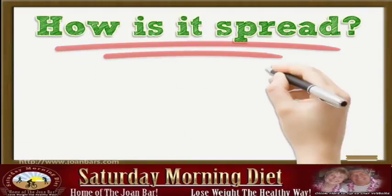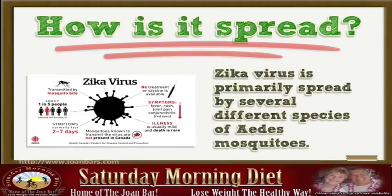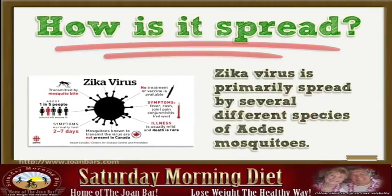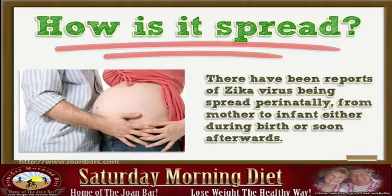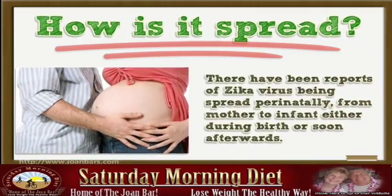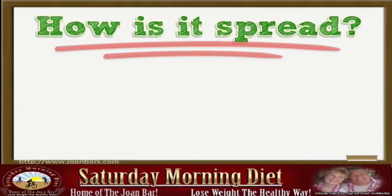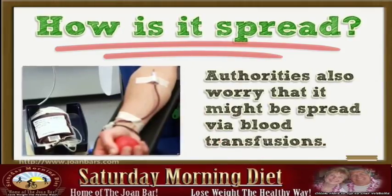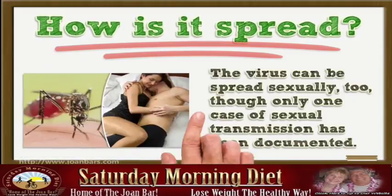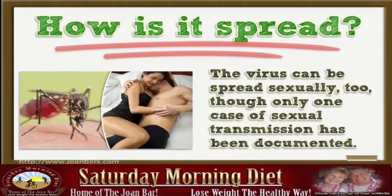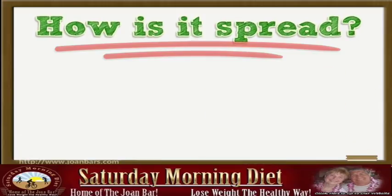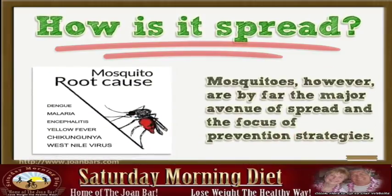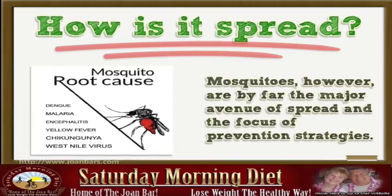How is it spread? Zika virus is primarily spread by several different species of Aedes mosquitoes. There have been reports of Zika virus being spread perinatally, from mother to infant either during birth or soon afterwards. Authorities also worried that it might be spread via blood transfusions. The virus can be spread sexually too, though only one case of sexual transmission has been documented. Mosquitoes, however, are by far the major avenue of spread and the focus of prevention strategies.